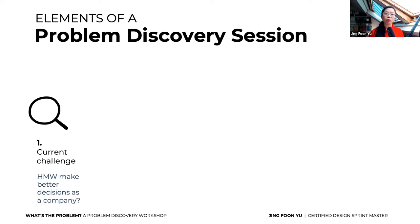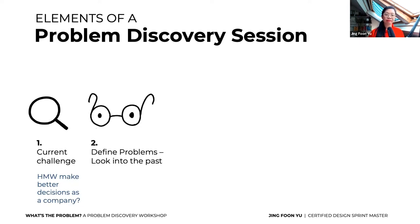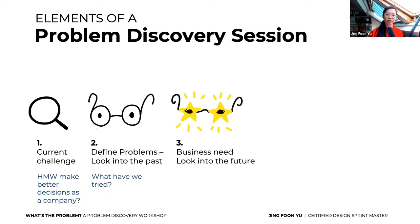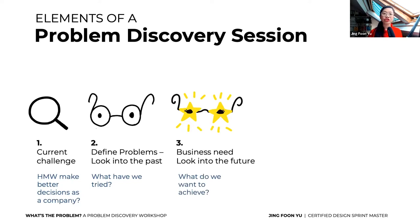Element one: the current challenge. You need to have a current challenge — something like 'How might we make better decisions as a company?' Element two: define problems by looking into the past — ask 'What have we tried?' Element three: the business need — look into the future and ask 'What do we want to achieve?'